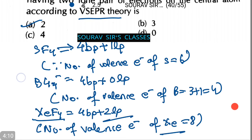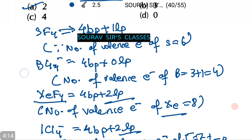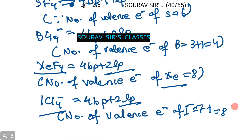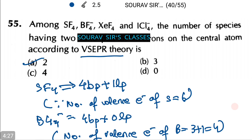And we have obtained that there are two lone pair of electrons in cases of xenon fluoride and ICl₄⁻. Thus, this corresponds with option number A in our question.